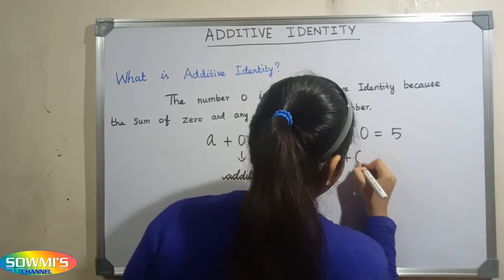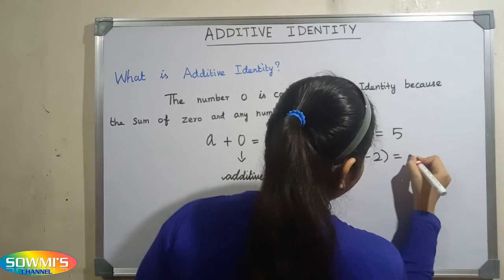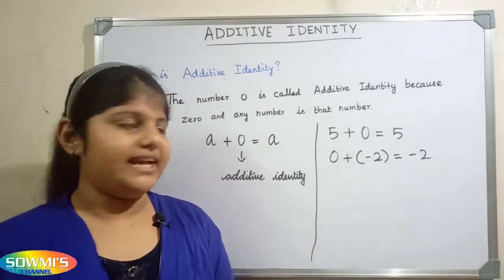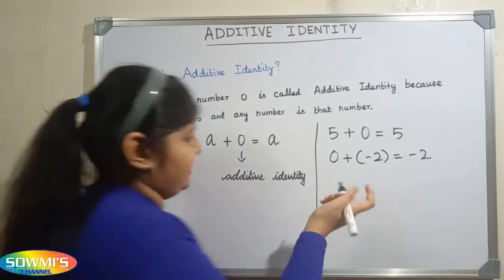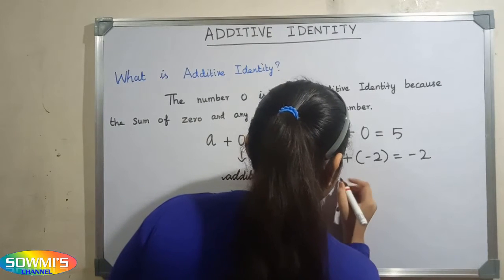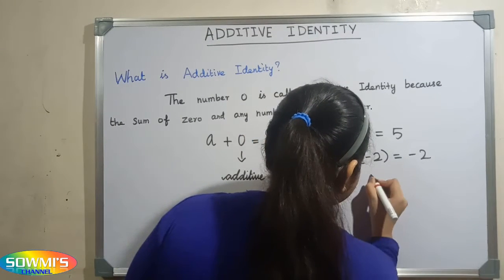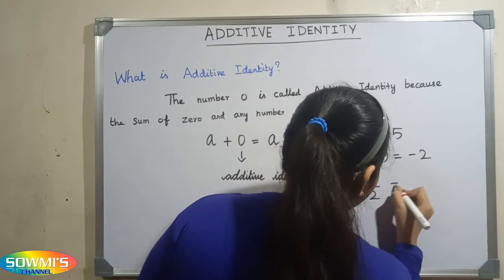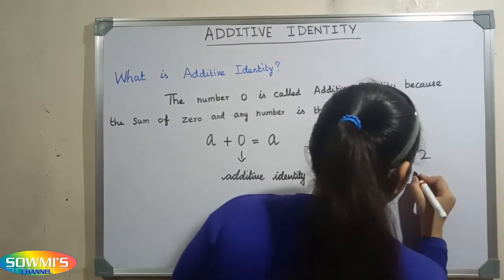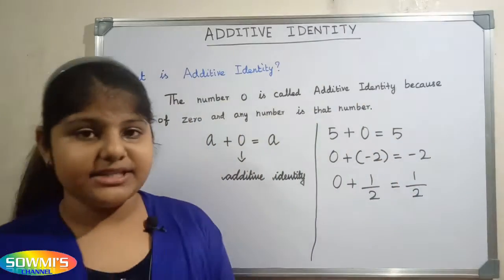Next we will take zero plus minus two is equal to minus two. Next we will take another example in fraction: zero plus one by two is equal to one by two.